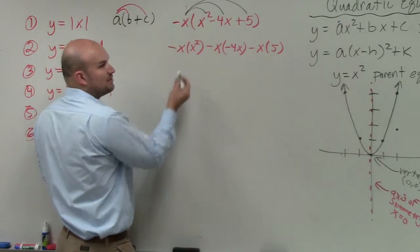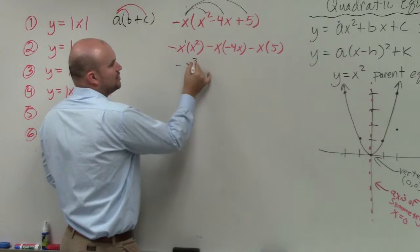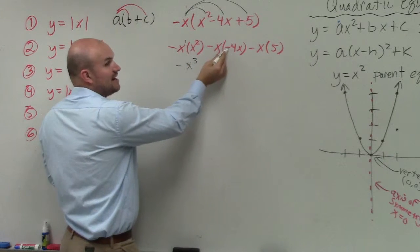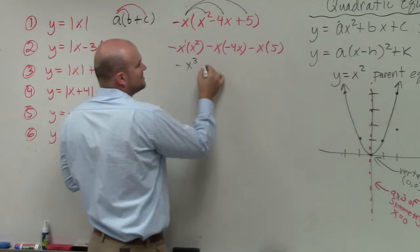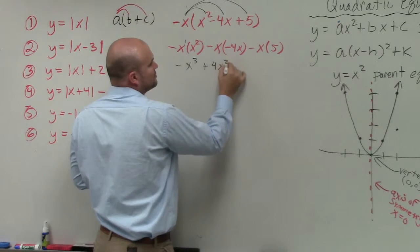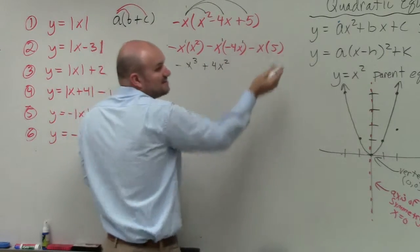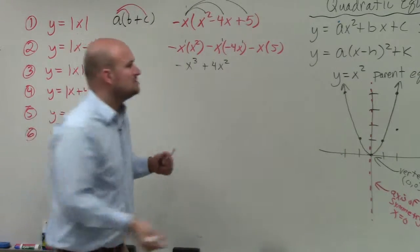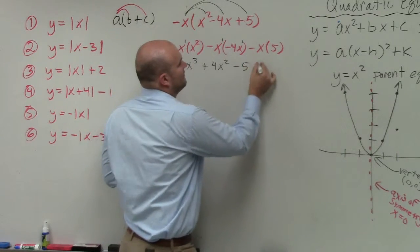Now, negative x times x squared, add the powers, negative x cubed. Negative times negative is a positive, x times x is a positive 4x squared. You add the powers. Negative x times 5, that's a variable times a number, so that's just going to be a negative 5x.